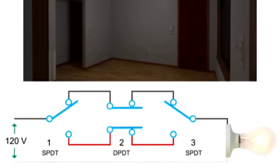In this four-way circuit example, we have two single-pole double-throw switches on the left and right, and a double-pole double-throw switch in the middle.